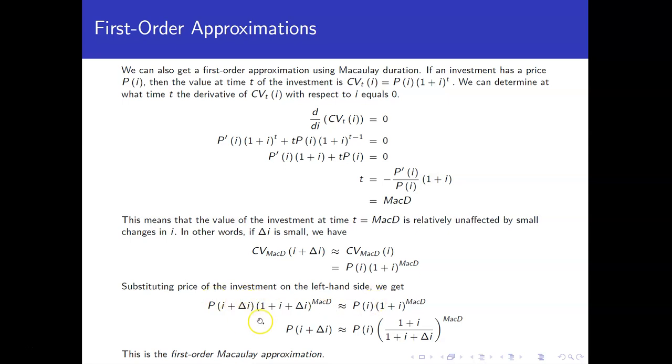So now let's just substitute the price of the investment on the left-hand side. This is just again using the current value formula that we had above. And then solve for the price at that interest rate. You get the price at the interest rate, the starting interest rate, not the changed one. And then times this quotient raised to the Macaulay duration. So this is what's referred to as the first order Macaulay approximation of what happens to the price for a small interest rate change.